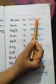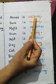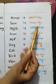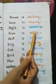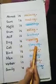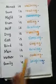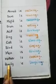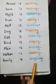Now we are using action words in sentences. Ammar is walking. Sara is reading. Majit is swimming. Iram is eating. Asif is drinking. Dog is running. Cat is sleeping. Bird is singing. Man is driving. Mother is cooking. Family is laughing. All are action words.